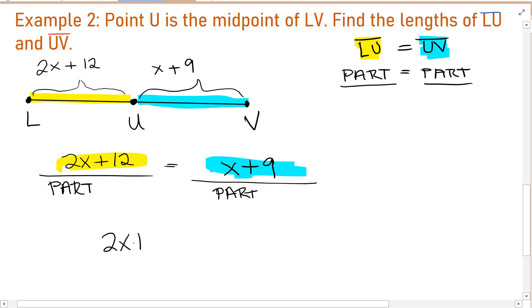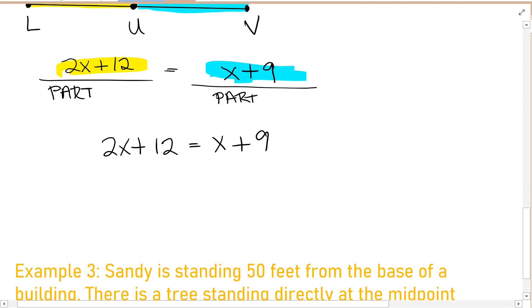I have no like terms on either side, so I need to use inverse operations. To begin, I will subtract 12. That gives me 0, so 2X is all that's left on the left side, X minus 3. To bring the X to the left side, I subtract X. 2X minus X is 1X. X minus X is 0. And 0 minus 3 is negative 3.